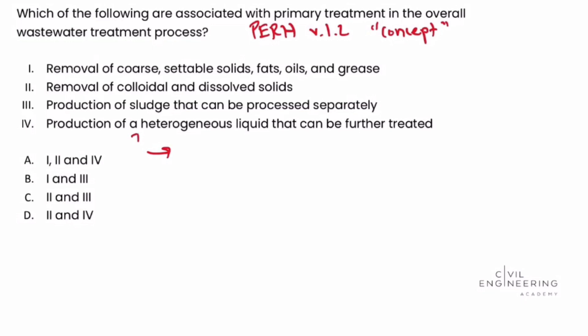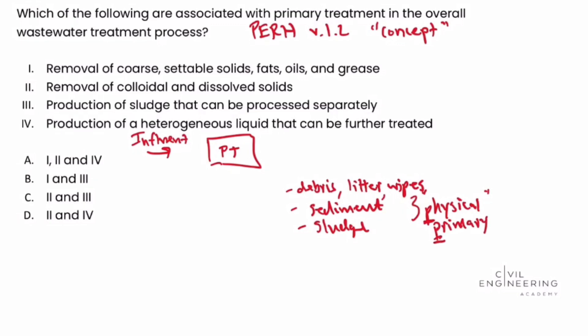So we have influent coming in, and it goes through primary treatment, and that's going to treat your physical debris and contents in that influent. That's going to deal with things such as any debris, like litter, big items, wipes, and then some of the sediment settle out, and then ultimately will produce a sludge. You can think of these as physical. So physical is primary - P and P might be a way to remember that. A sludge will settle out.